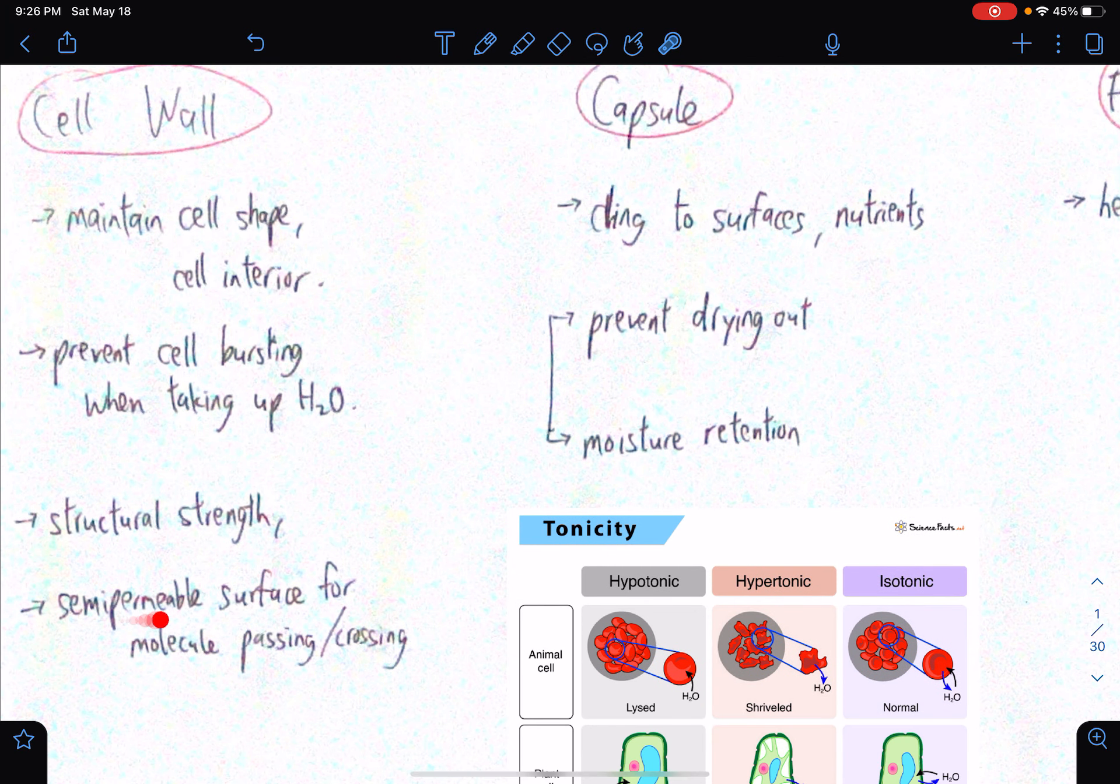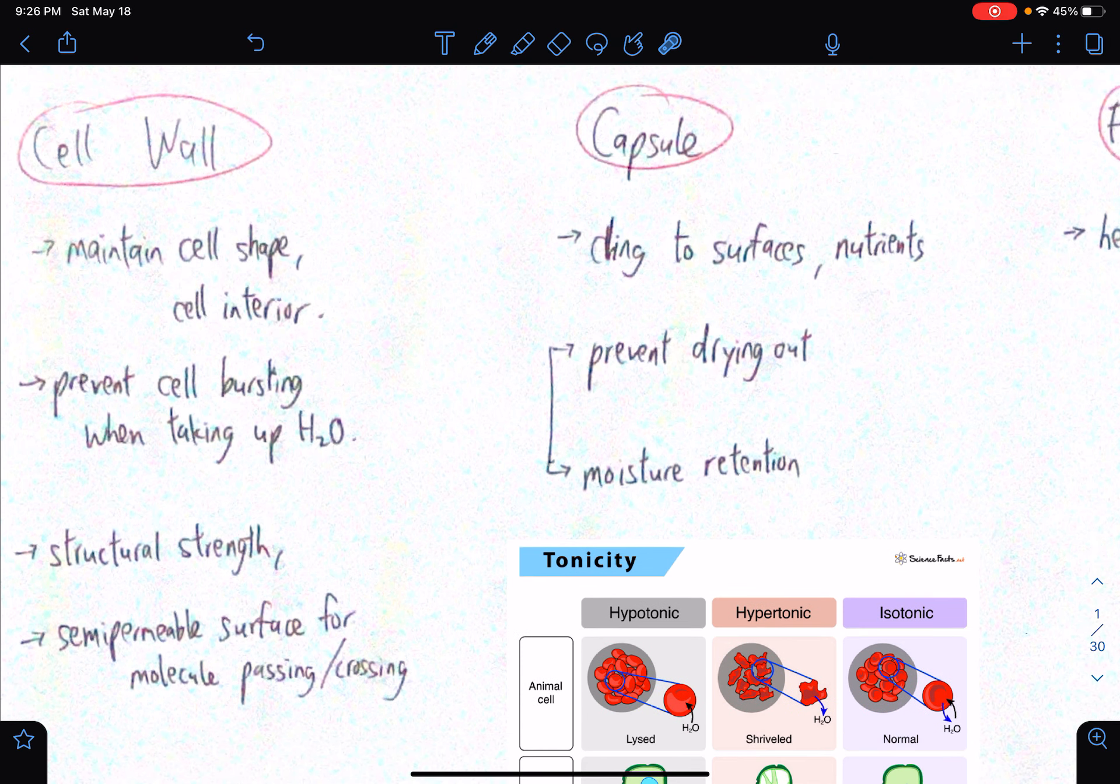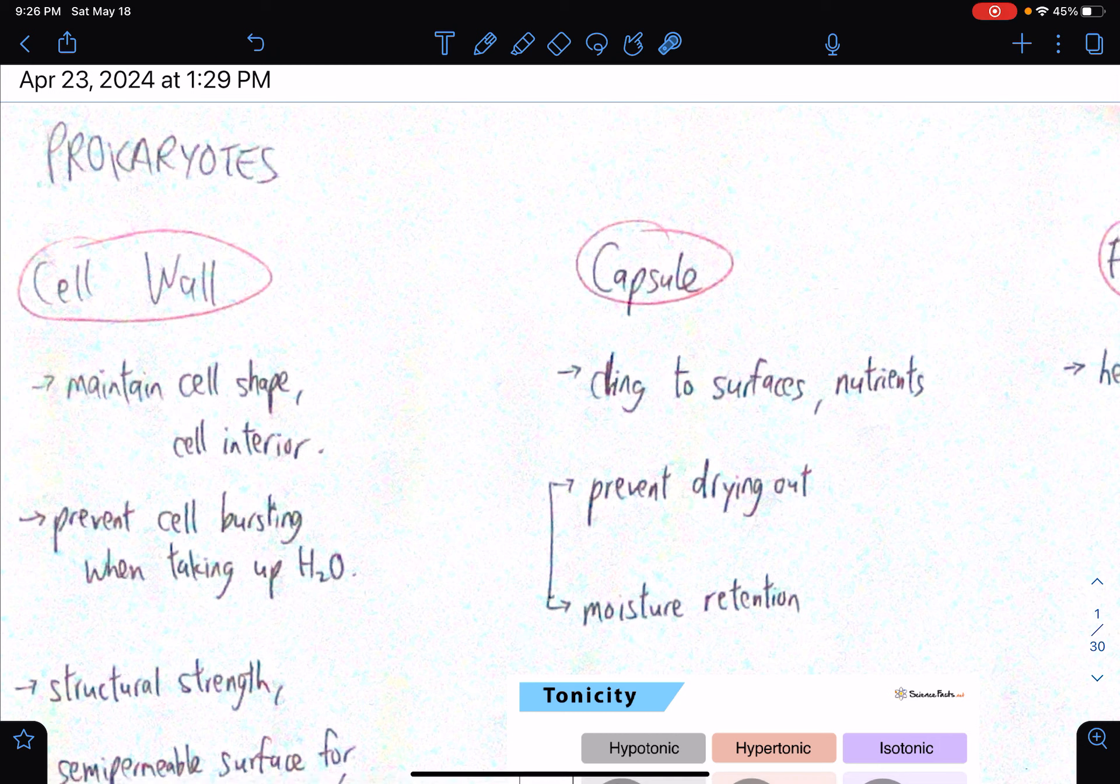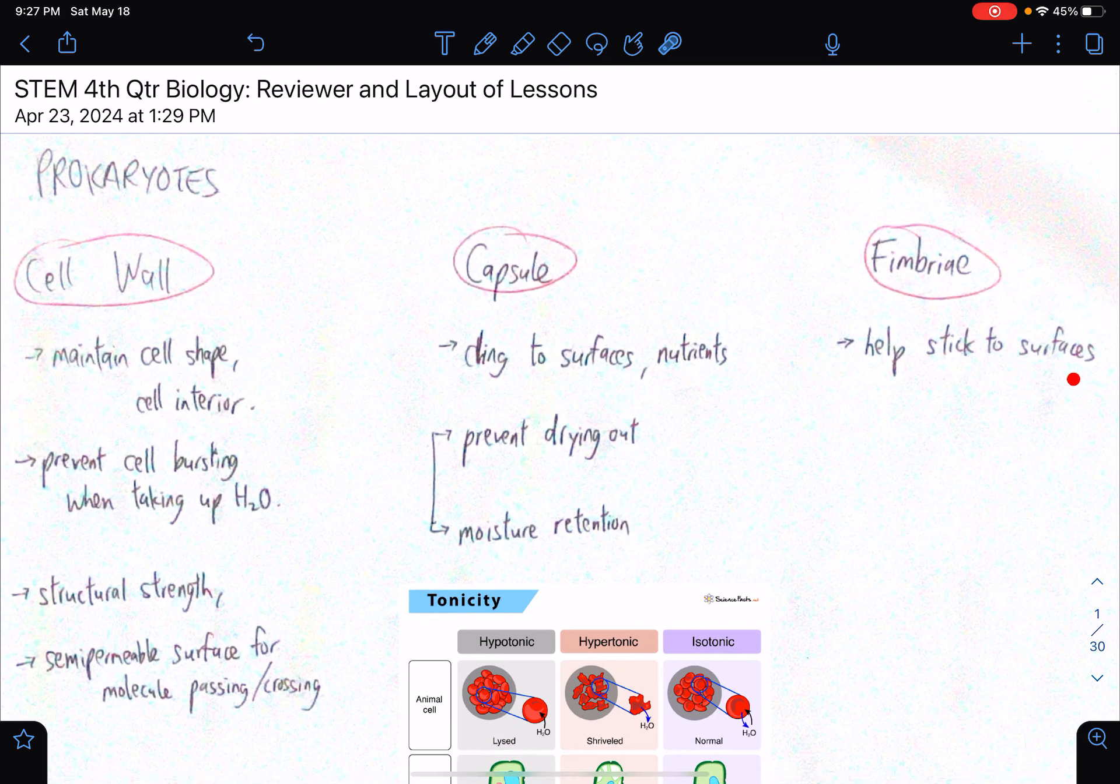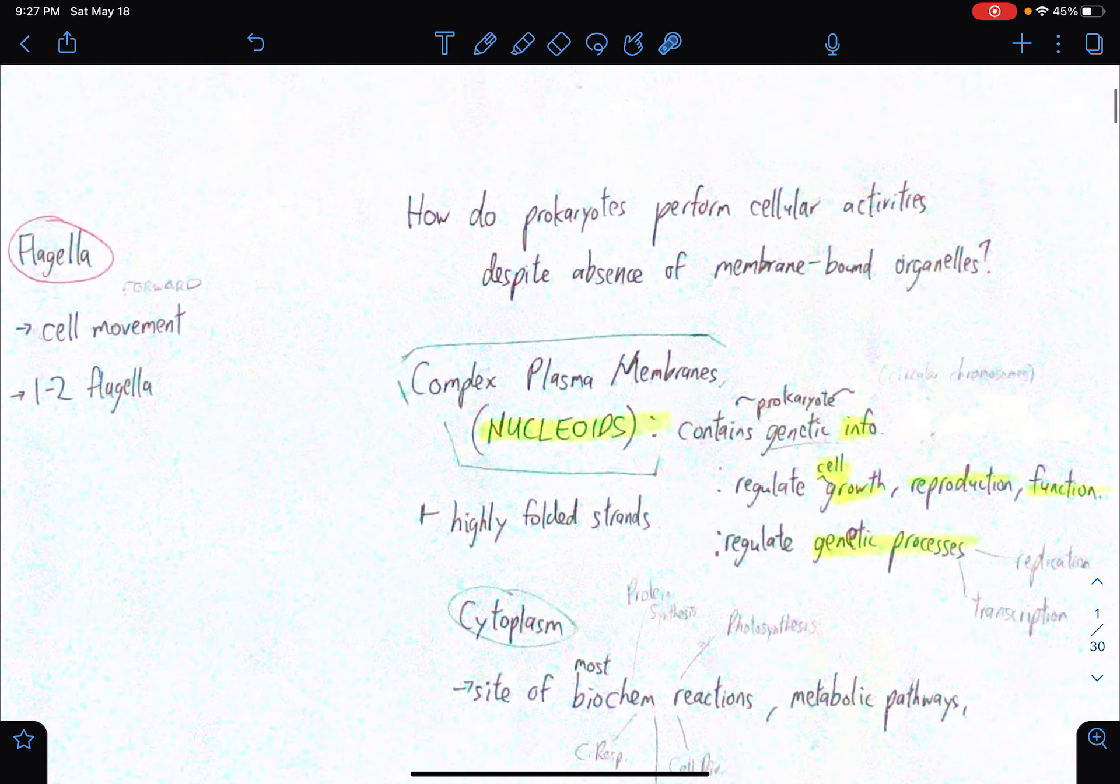Okay, so the cell wall is structurally strong for the role that it does in prokaryotes and plant cells. So at the same time, they have a semi-permeable surface for molecule passing or crossing. So aside from what's usually called the plasma membrane, for plant cells and prokaryote cells, the cell wall still has a function similar to plasma membranes. What's the capsule? So it clings to surfaces and nutrients. So this is so that the prokaryote prevents from drying out and moisture is retained, regardless of the circumstances, especially if the environment isn't favorable. And yes, there's fimbriae. It helps stick to surfaces. So it basically acts as an adhesive in that sense.